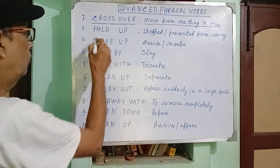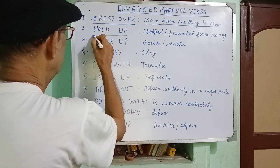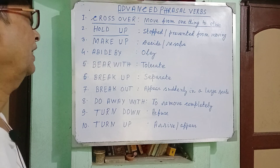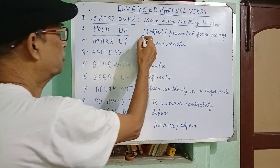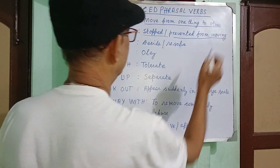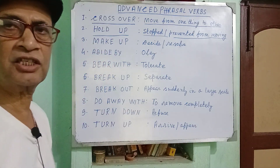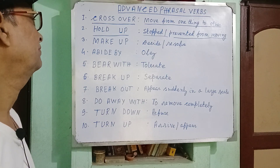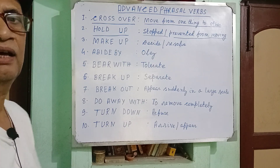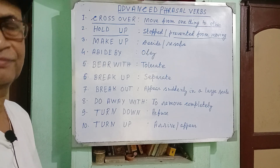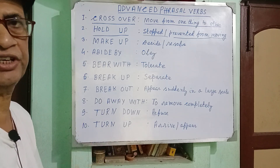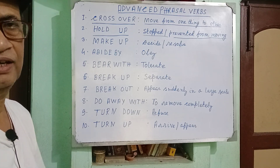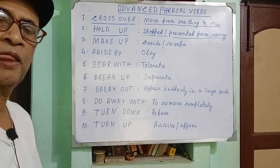Another example is 'hold off,' which is also a frequently used phrasal verb. It means stopped or prevented from moving. For example, 'There is a long procession in the street, so the traffic has been held off.' Here, 'held off' is the past participle form of 'hold off.'